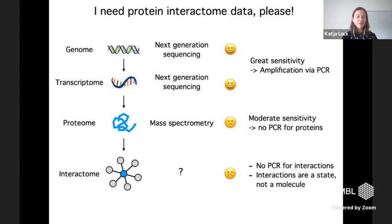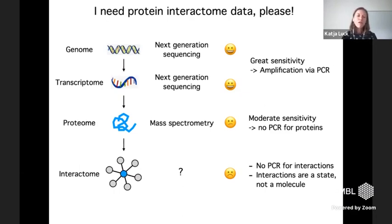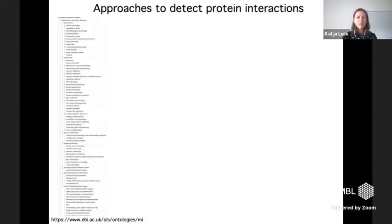When it comes to the interactome, unfortunately there's really no technique with sufficient sensitivity to tell you all the protein interactions that exist in your sample. We have no PCR for interactions — we cannot amplify or stabilize the weak and lowly abundant interactions in your dataset. Also, interactions are not a molecule — they are a state between two proteins that are non-covalently interacting. Even though we don't have a method that can capture the protein interactome in your sample, researchers have developed a plethora of different assays to still detect protein interactions, even though at a reduced throughput.